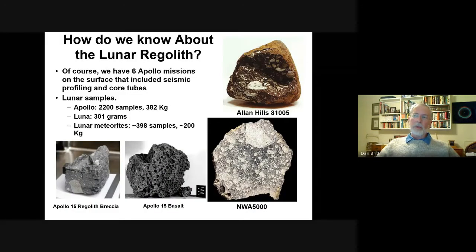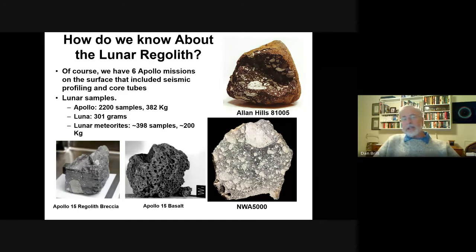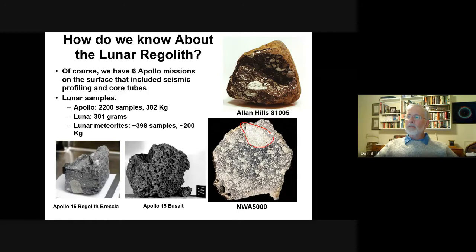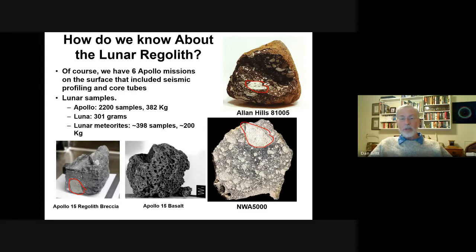How do we know about lunar regolith? There's been a number of missions. We've had six manned missions, and we have a lot of samples — 2,200 samples from Apollo, samples from the Russian Lunas, and also about 400 lunar meteorites. The characteristic of lunar samples is that you basically have two kinds of lunar lithologies. You have white stuff made up of the mineral anorthosite.